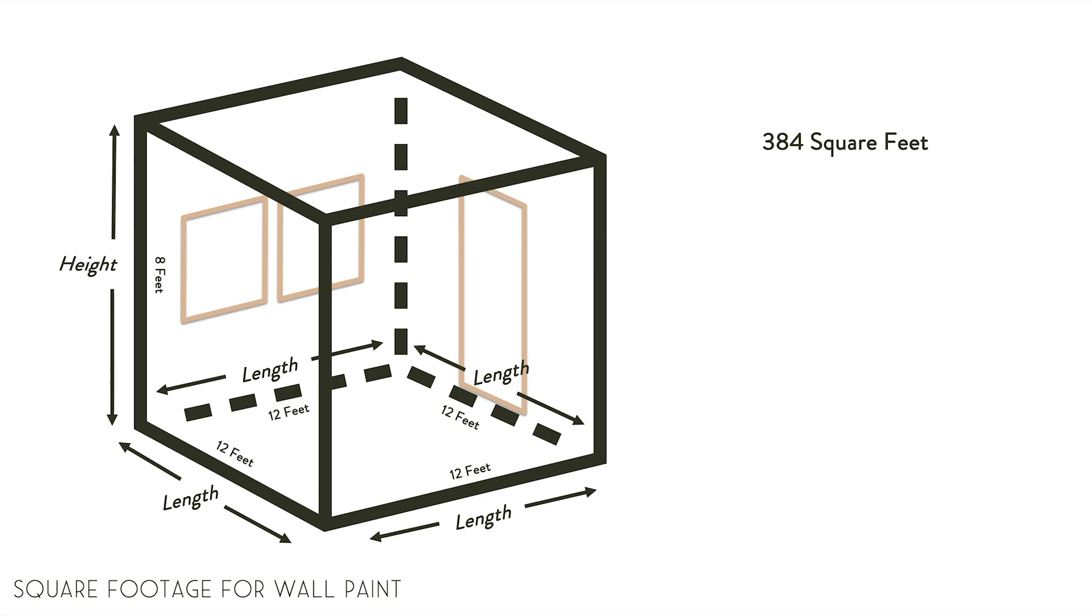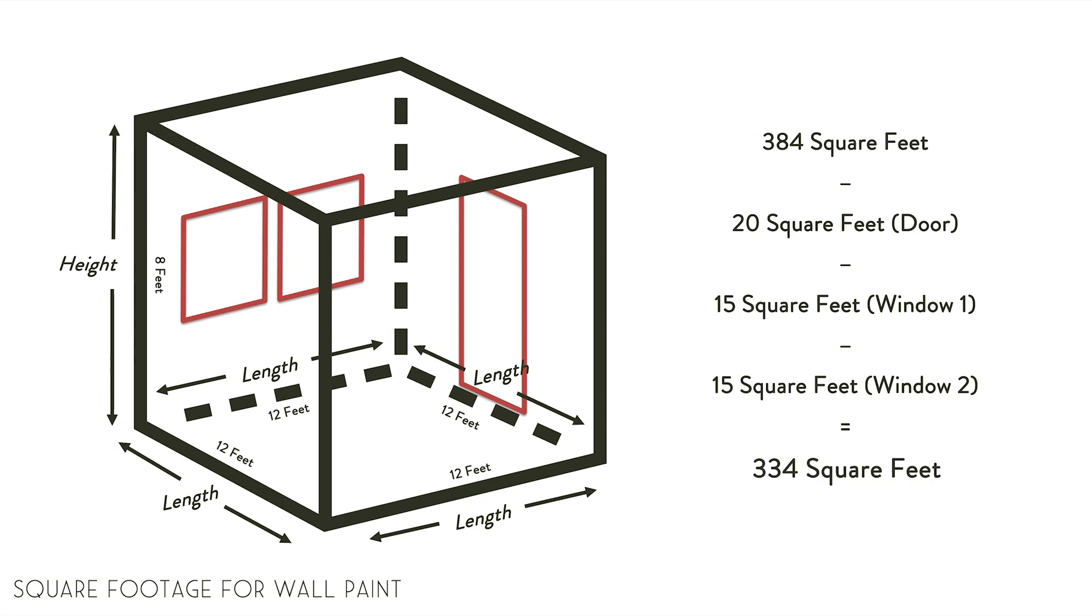In our example, we'd subtract 20 square feet for the door and 15 square feet for each window, so 384 minus 20 minus 15 each for the two windows equals 334 square feet.